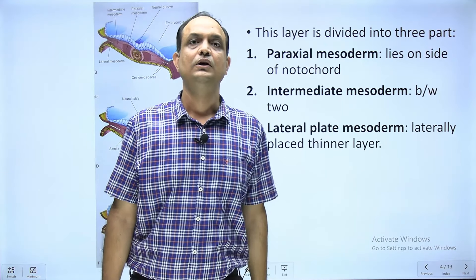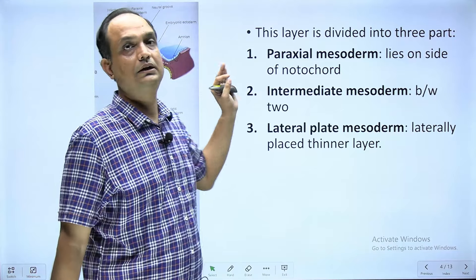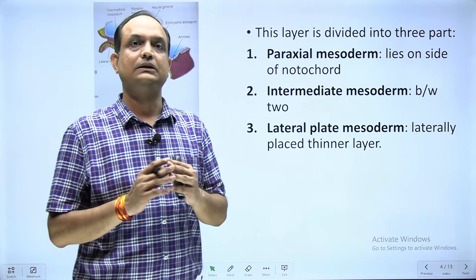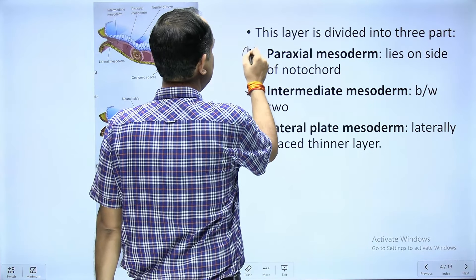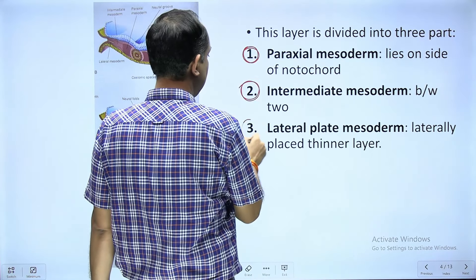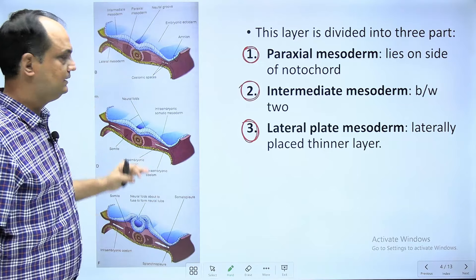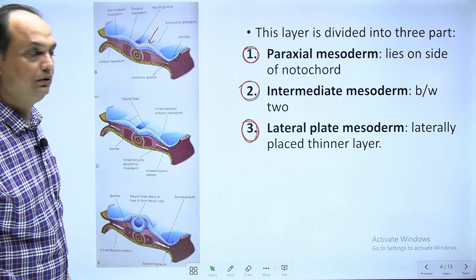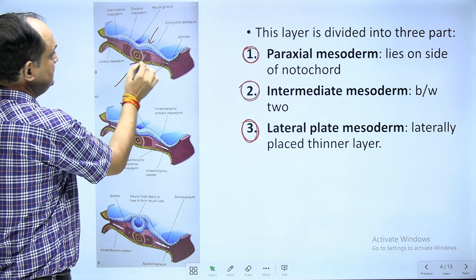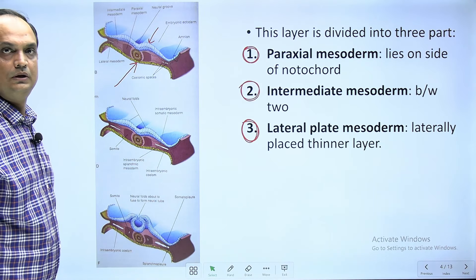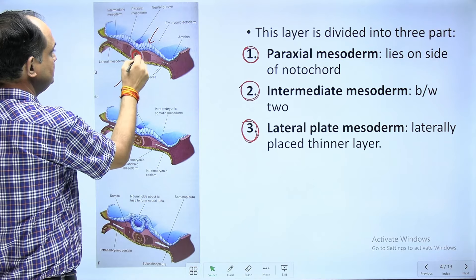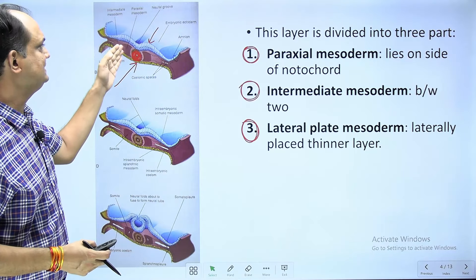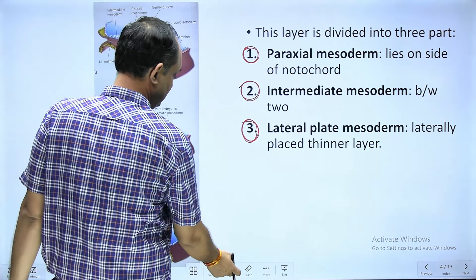The most important question for exams is how to classify the intra embryonic mesoderm. It is divided into three parts: para axial, intermediate, and lateral plate mesoderm. In the diagrams, the blue color line is the ectoderm, the underlying layer is the endoderm, and in the middle portion is the mesoderm. In the center, the notochord forms first and then creates changes in the adjacent intra embryonic mesoderm.